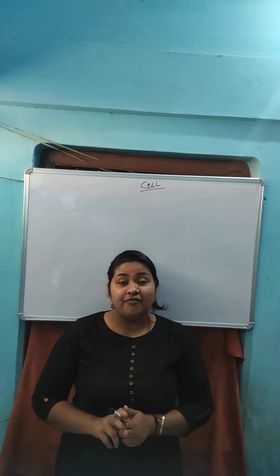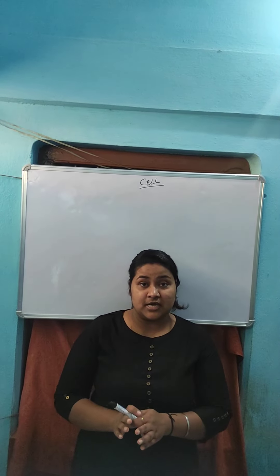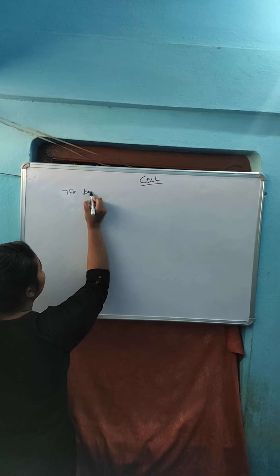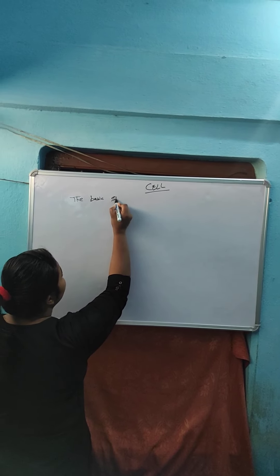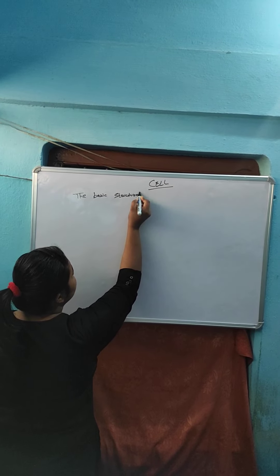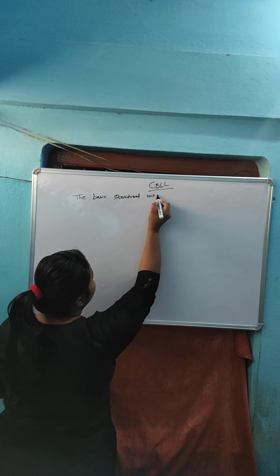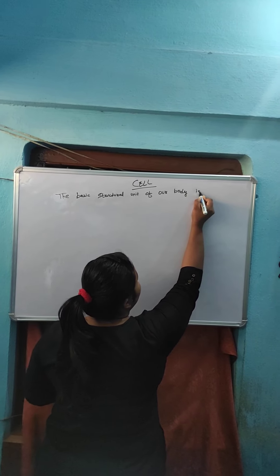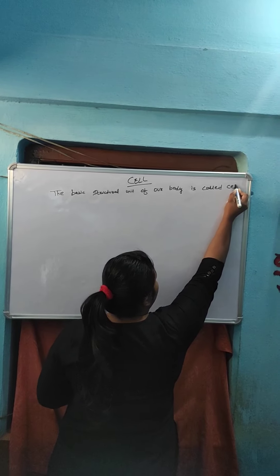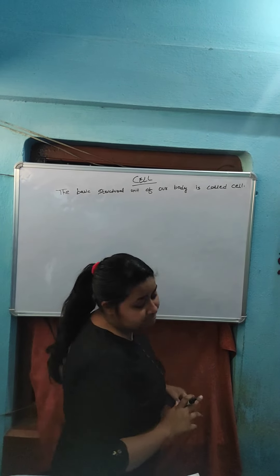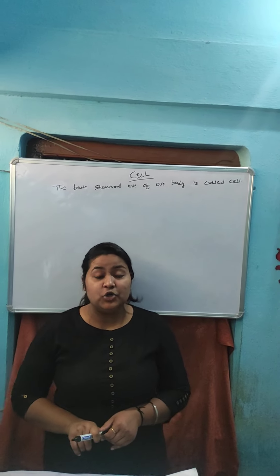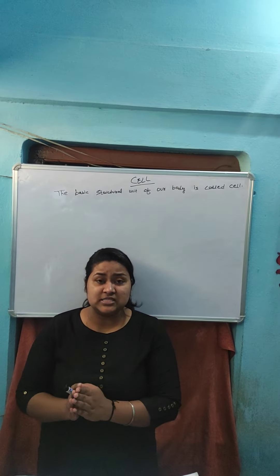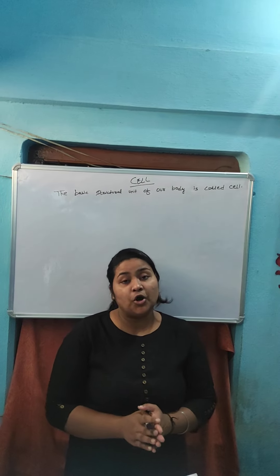The basic structural unit of our body is called cell. For example, cells may be compared to bricks. Bricks are assembled to make a building. Similarly, the cells are assembled to make the body of every organism.